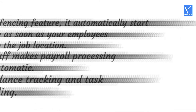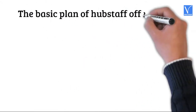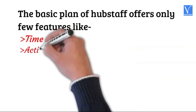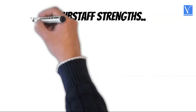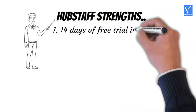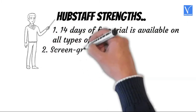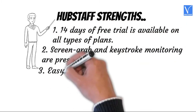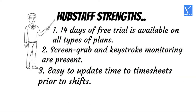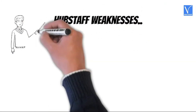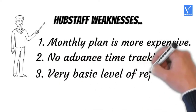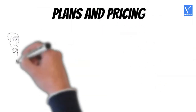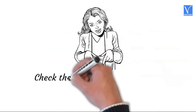The basic plan of Hubstaff offers only a few features like time tracking, activity levels, limited screenshots, and limited payments. Strengths of Hubstaff: 14 days of free trial available on all types of plans, screen grab and keystroke monitoring are present, easy to update timesheets prior to shifts, and easy to reschedule shifts for employees. Weaknesses of Hubstaff: monthly plan is more expensive, no advanced time tracking, and very basic level of reporting. Plans and prices are exhibited on the screen — product link is in the description.